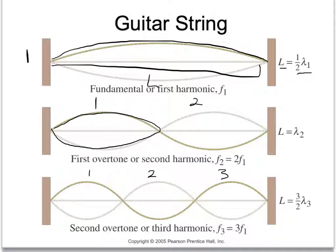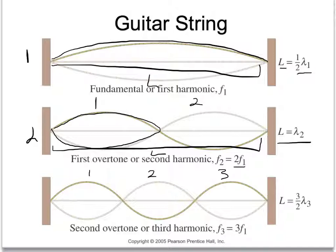Here's our second harmonic. We notice that L in this case is the full wavelength, so L equals lambda 2. It is also twice the frequency of the first harmonic. These go up in multiples of whole numbers for the guitar string. The second gives us one and a half wavelengths, so L equals one and a half wavelengths. This is the third harmonic — three times the fundamental harmonic in frequency.